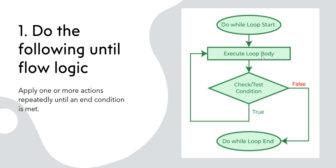The do-while loop starts and executes the loop body — whatever actions you have defined, like addition of a record, deletion of a record, or updation of a record. All of that gets executed, and then it checks the condition. That means the do-while loop will execute at least once before checking the condition. After checking, if the condition is true, it executes the loop body again and keeps doing that until the condition is set to false. You must ensure there is a condition that becomes false after a certain number of iterations so it doesn't go into an infinite loop.